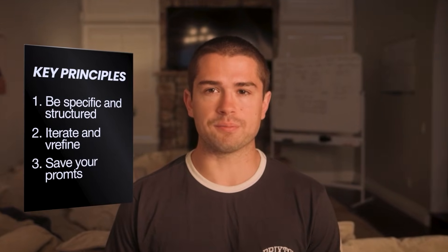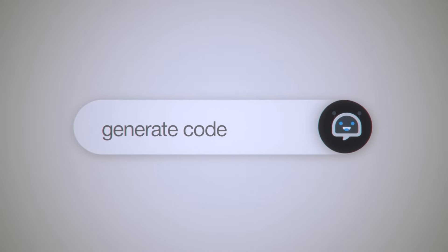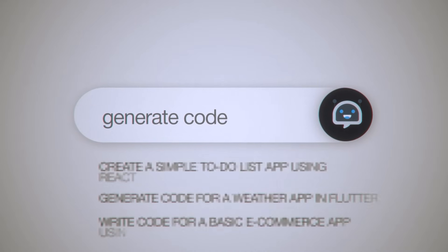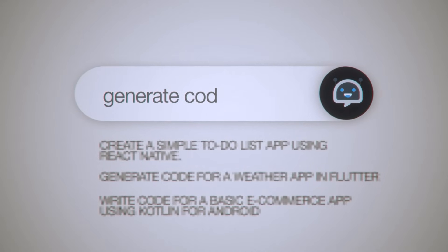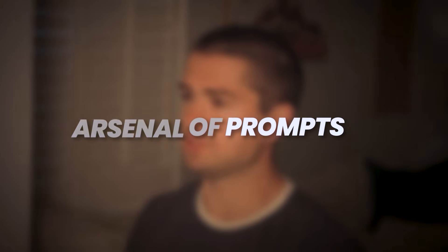Number three: save your prompts. I have a number of different prompts that I use for different tasks. When I want AI to generate code for me, I'll use specific prompts about the format I'm looking for. When I'm generating scripts for content, I will use different prompts. Over time, you should build out an arsenal of prompts based on your different use cases — development, content creation, marketing, design ideation, and more.